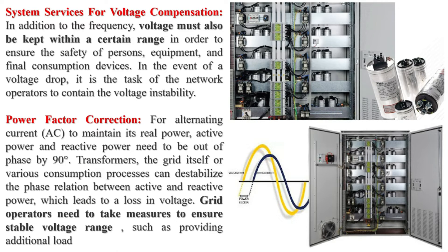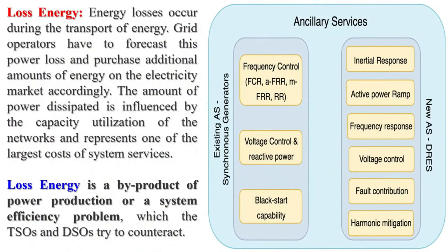Energy Imbalance occurs when the rates of energy intake and energy expenditure are not the same, leading to a surplus or deficit of energy. In the context of power systems, energy imbalance refers to the situation where the supply of electricity does not match the demand. This can occur due to fluctuations in renewable energy generation like wind or solar power, changes in consumer demand, or unexpected outages.